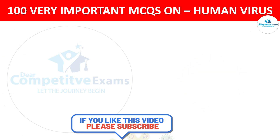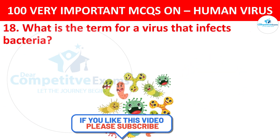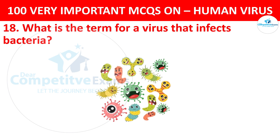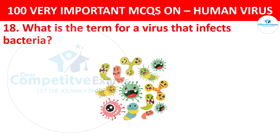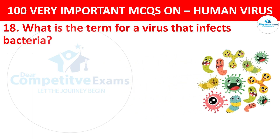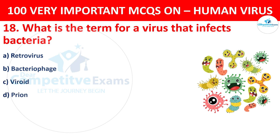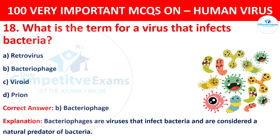Question 18. What is the term for a virus that infects bacteria? Your options are retrovirus, bacteriophage, viroid, or prion. The correct answer is B, that is bacteriophage. Bacteriophages are viruses that infect bacteria and are considered a natural predator of bacteria.